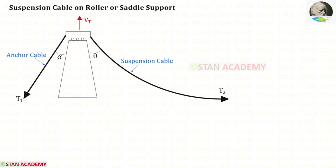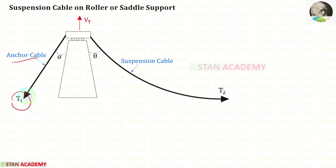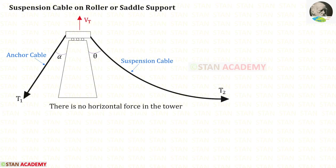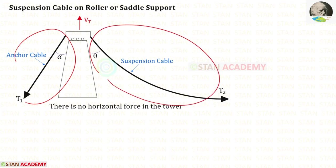Now let us consider the suspension cable on roller or saddle support. Let us keep the tension in the anchor cable as T1 and the tension in the suspension cable as T2. Since it is a roller support, there will be no horizontal force — there will be only vertical force in the top of the tower. In this case the horizontal force on the left side and on the right side should be the same.